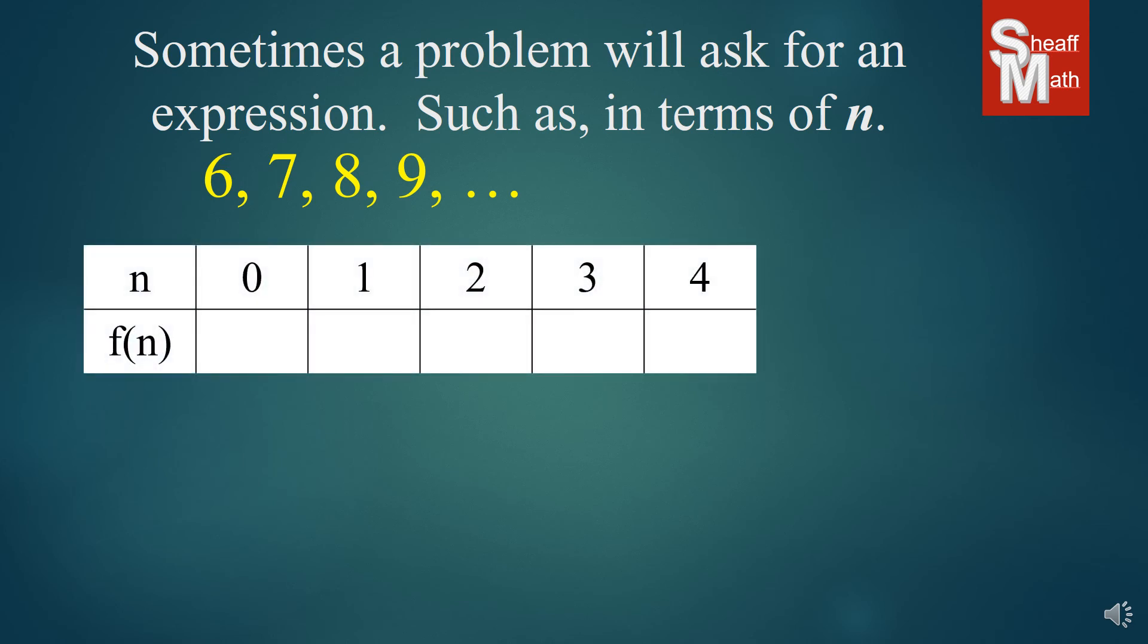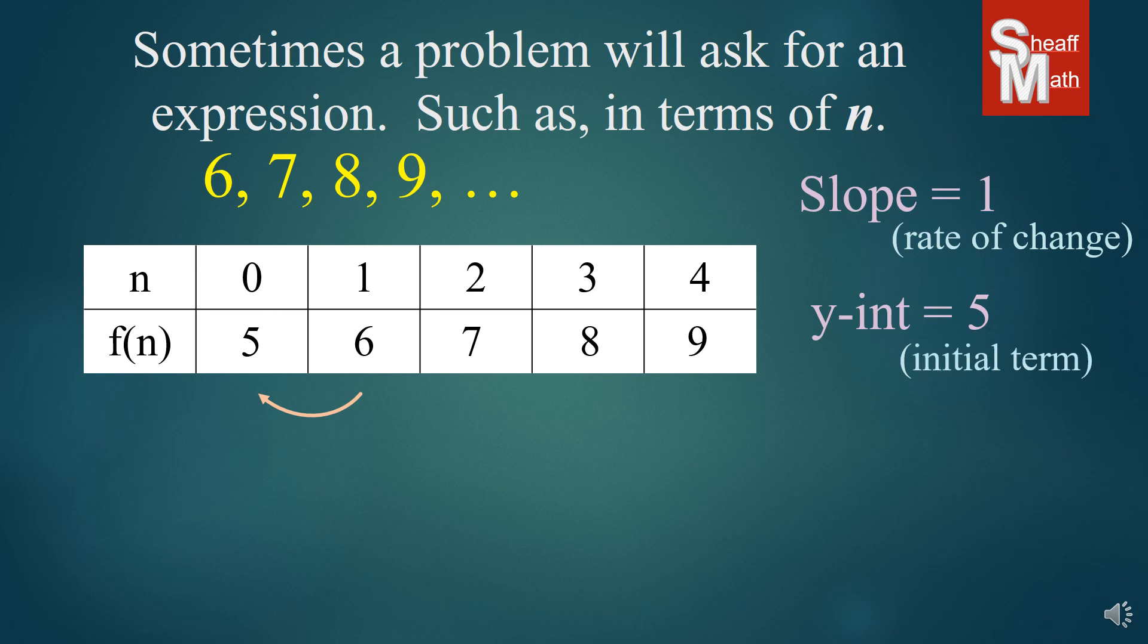So, we are going to make an xy table. But this is an n and then function of n table, f of n. And so, that's how we write it if we're just talking about what do we do to the n to get our number. And so, we put 6, 7, 8, and 9 in there. And so, as you can see, the rate of change is really easy. It's going up by 1. And so, there is our slope of 1. And then we go and find our 0 term, which we go back 1. And so, that's 5. And so, that's our y-intercept, also known as our initial term.